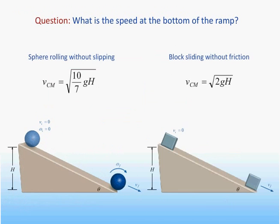We can compare this speed to that of an object sliding down a frictionless ramp inclined at the same angle, and we find that the rolling ball moves slower, since some of the initial potential energy has been converted to rotational kinetic energy.